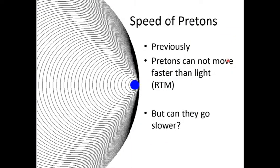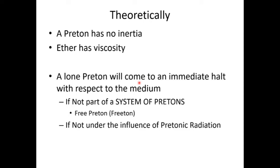What we talked about previously is that pretons cannot move faster than the speed of light, otherwise they're going to intersect their own inertial field, which will cause them to react in the opposite direction. But can pretons move slower? Theoretically, if a preton is not under force from being inside a system of matter, and not under the influence of some distant pretonic radiation, and it's in a viscous medium like the ether — and a preton has no inertia — then theoretically a preton should come to an immediate halt within the medium.